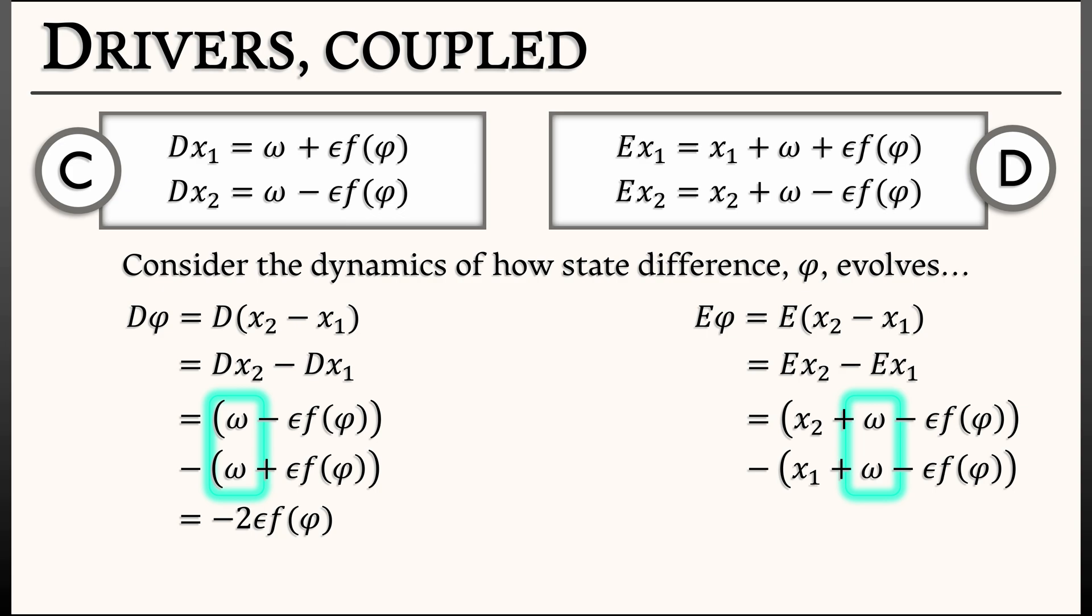In discrete time, what do we have? We have e phi equals x2 minus x1. Oh, wait, that's phi. Minus 2 times epsilon times f of phi.